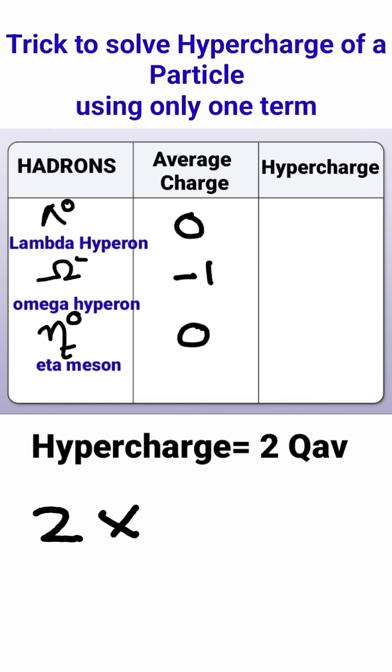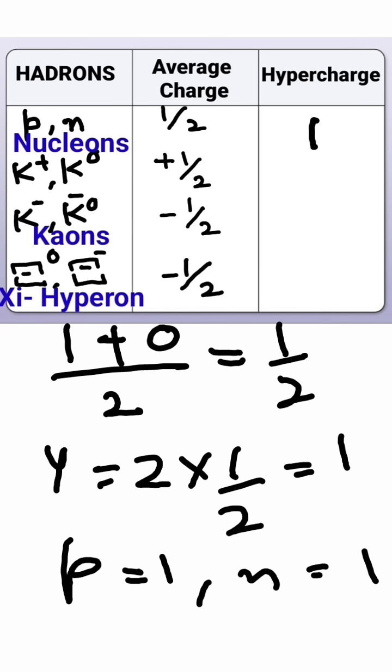Next we have omega hyperon with average charge minus one, so hypercharge will be minus two for it. For eta meson, average charge is zero so hypercharge will be zero for it. For nucleons, proton is having charge one and neutron is having charge zero.